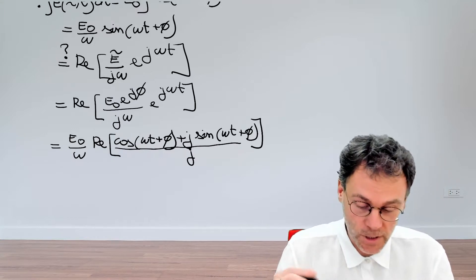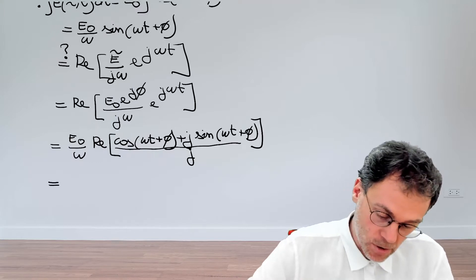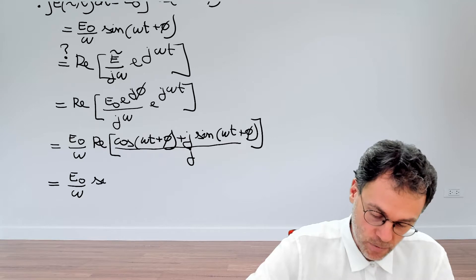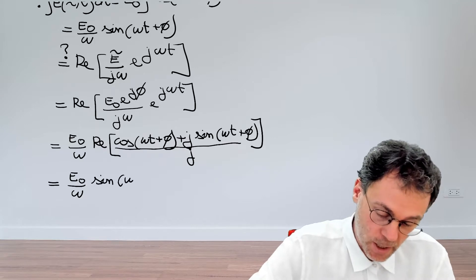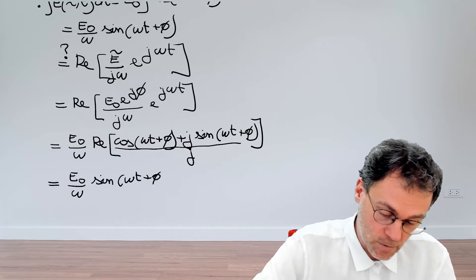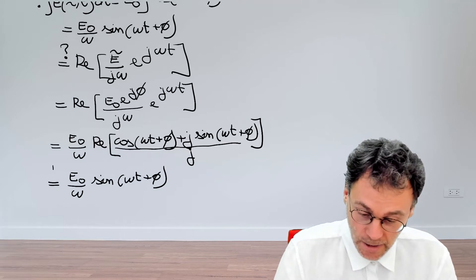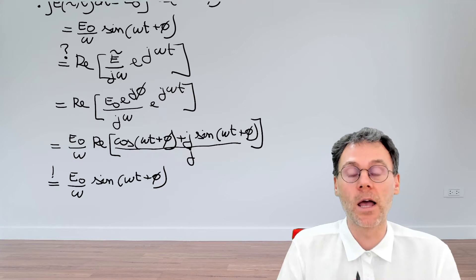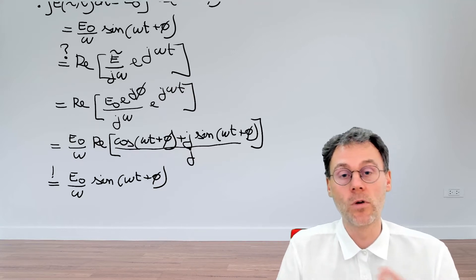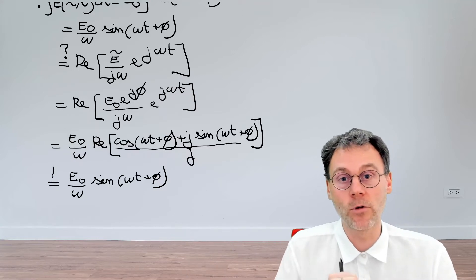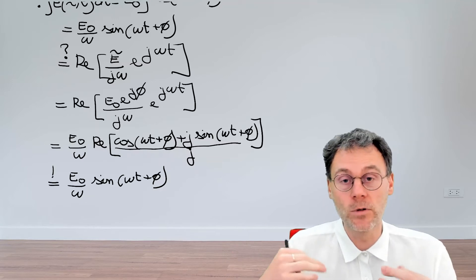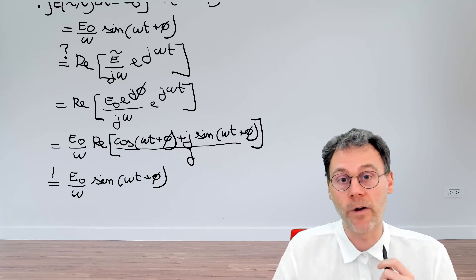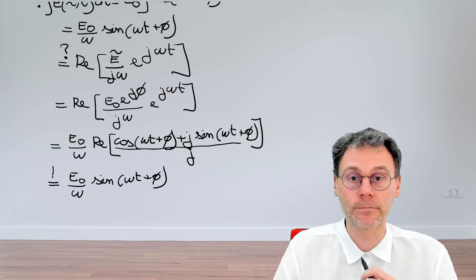And then, it becomes obvious to see that if we take the real part, the only thing that we're left with is the sine. So, this becomes E₀ divided by ω sine(ω t + φ). And this is indeed what we should have up here. So, you indeed can verify that if we want to do time integration in the time domain, that corresponds in the frequency domain, in the phasor domain, to division by a factor j ω. So, here we go.